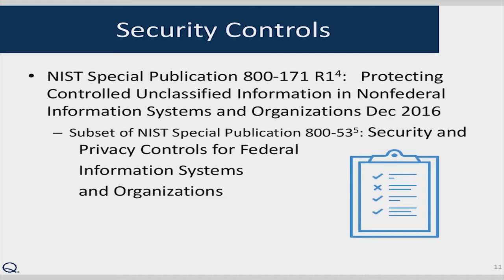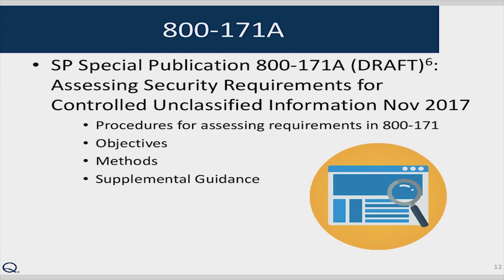The security controls in NIST 800-171 Revision 1, 'Protecting Controlled Unclassified Information in Non-Federal Information Systems and Organizations,' is a subset of the security and privacy controls for federal information systems in 800-53. In November 2017, a supplement 800-171A was released containing procedures for assessing the 800-171 requirements, providing more detail including objectives, methods, and additional guidance to meet those standards.